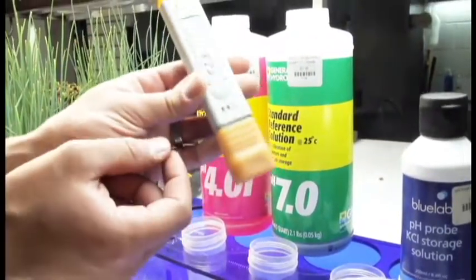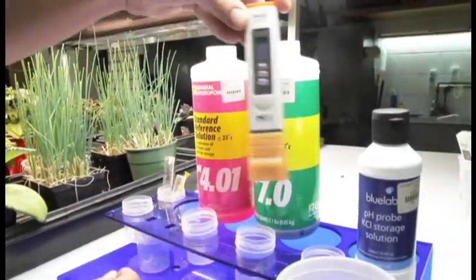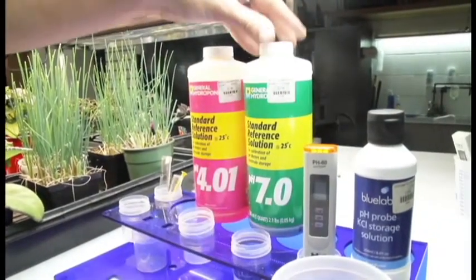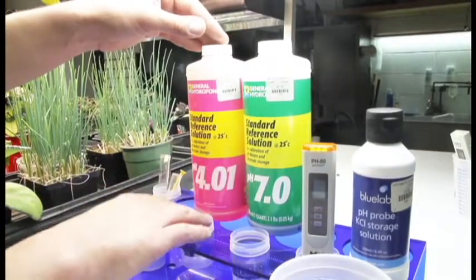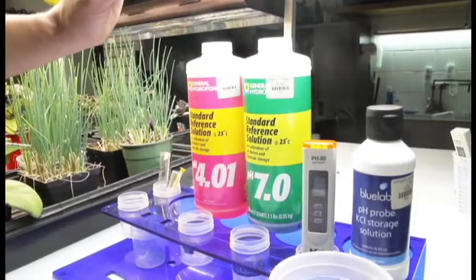The first thing we need to do is get the meter ready to calibrate. We're going to use our 4.0 and 7.0 calibration solutions. I like to leave my bottles behind the glass that I'm going to put the solution in, so I don't forget which solution is in which glass.